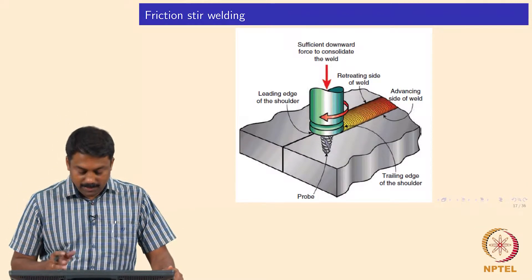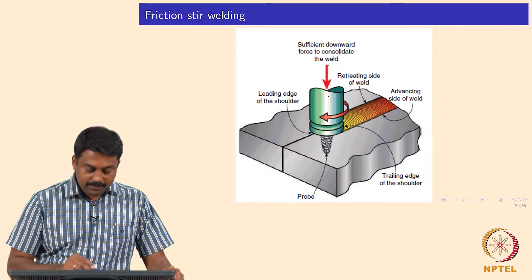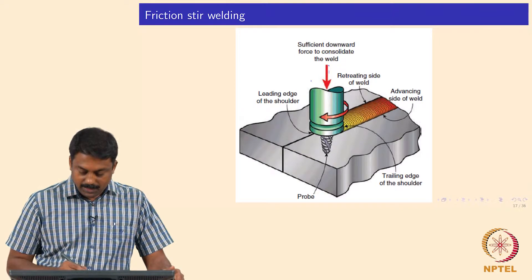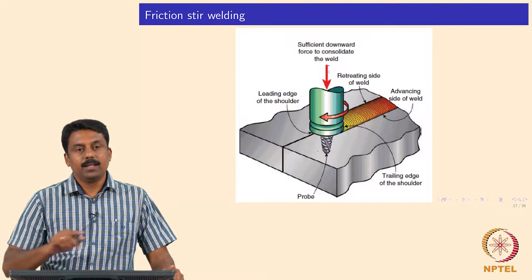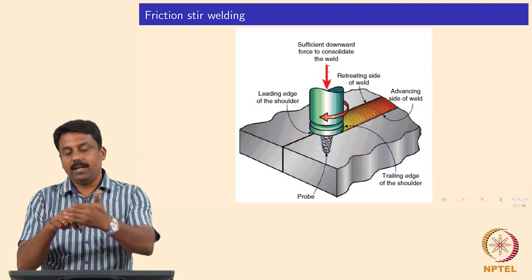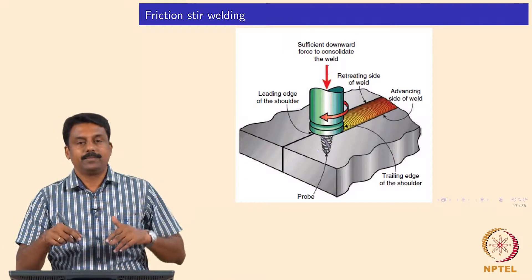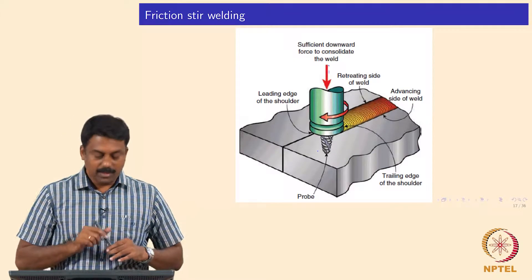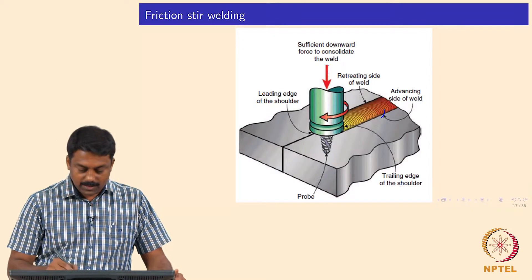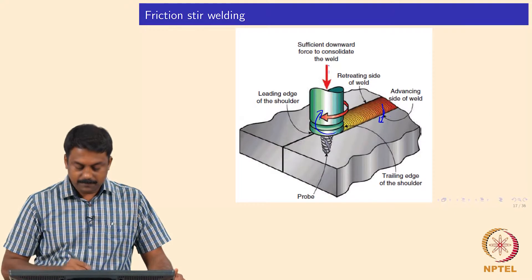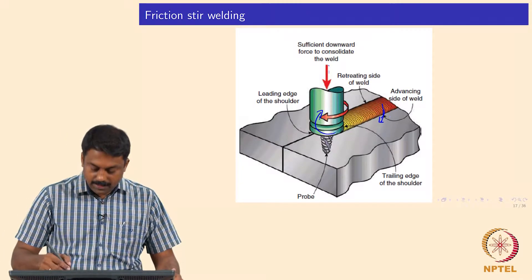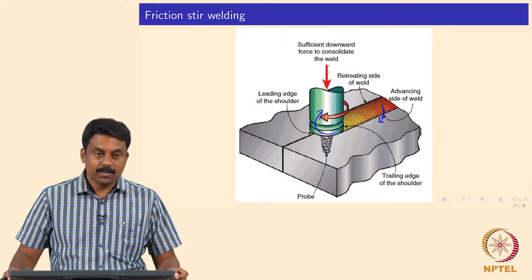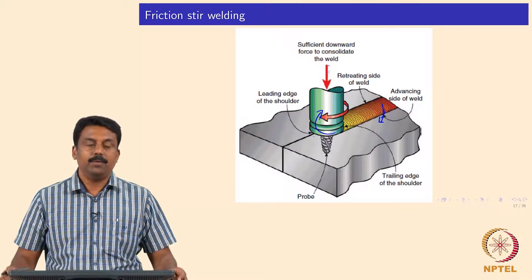In the typical friction stir welding setup, the pin is plunged into the material and rotated. You have an advancing side — when the pin moves clockwise, the side where pin motion and travel direction are aligned — and a retreating side where they oppose. You also have a leading side, which is the front of the tool, and a trailing side, which is the back of the tool.